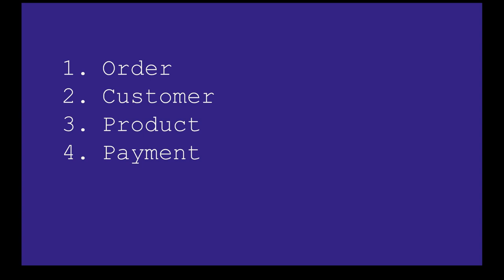Let's try to identify the relationships here. Order will have products, so there is a one-to-many relationship between order and product. Customer will have orders — customer can have multiple orders. Order will have multiple products, and product will belong to order. Payment will belong to order because there is a one-to-one mapping between order and payment.